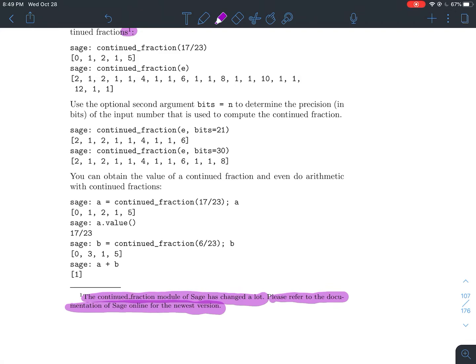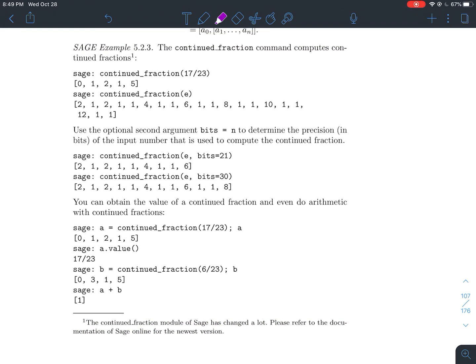But the usual syntax, if you want to do the continued fraction of something, it really is as easy as just continued_fraction of, what do you want? So what's the continued fraction of 17/23? It's this thing right here. And what's the continued fraction of e? You know, to some default precision. I'm not sure what the default is, to be honest. But anyway, it spits out this very long continued fraction here.